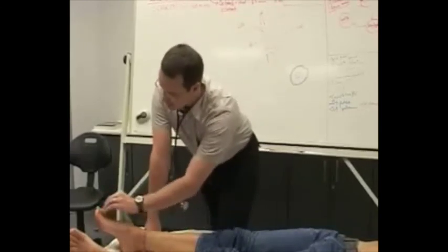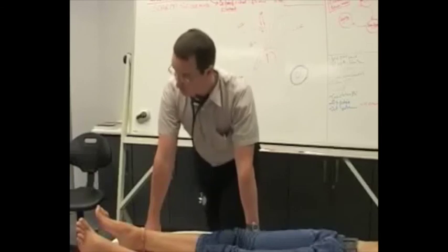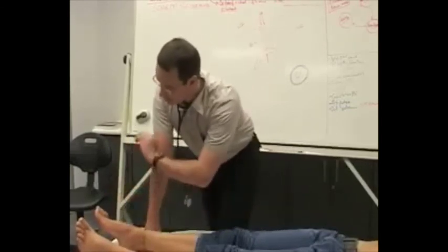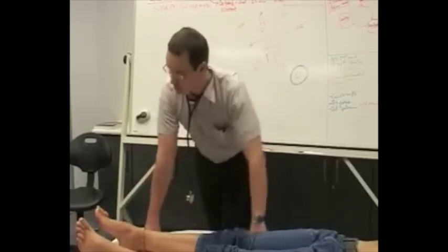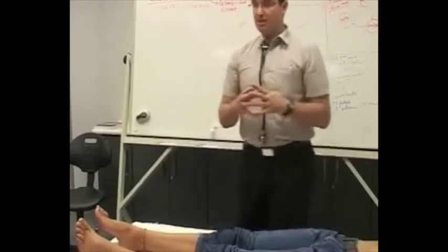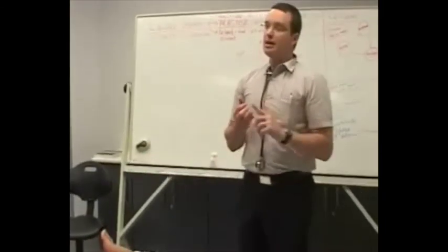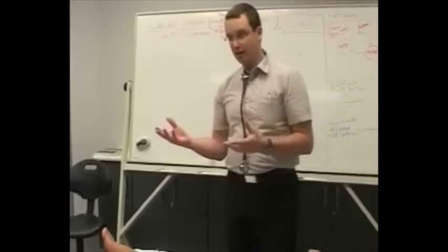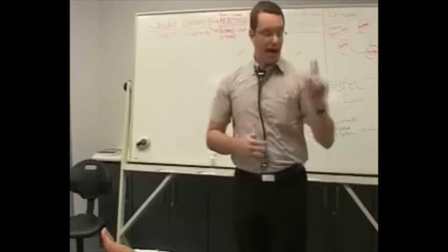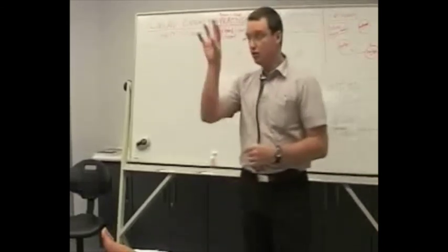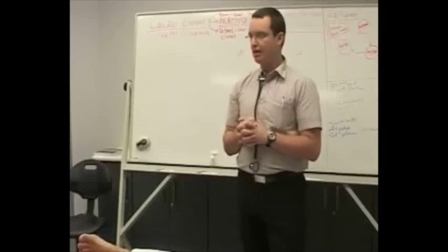We also investigate the toes and distal foot for the same signs as the fingers — clubbing, cyanosis, splinter bleeds — though remember the toes take much more trauma normally, so be aware of that. The last things in a cardiovascular examination are: take the patient's temperature, as fever could indicate infective endocarditis; perform a urine dipstick for blood, as infective endocarditis, nephritis, and nephrosis can give positive findings; and look into the eyes at the retinal vessels for evidence of diabetes, hypertension, and infective endocarditis — they can produce bleeds and changes on the retina. That's the end of the clinical examination.